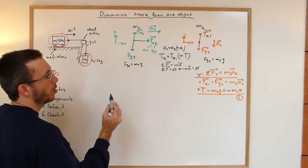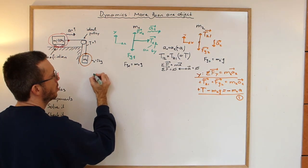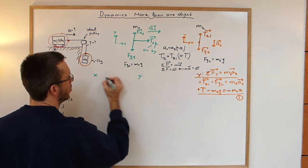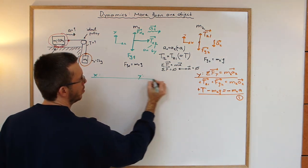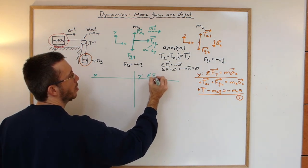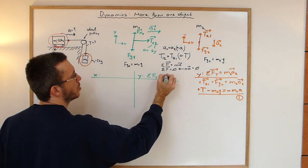If I look at my object one, I'm having an x direction and a y direction. In my y direction, I don't have an acceleration, so here we have Newton's first law.